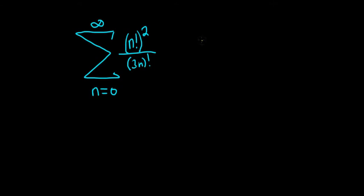Whenever you have factorials, it's usually a good idea to use the ratio test. The ratio test says if you take the limit as n approaches infinity of a sub n plus 1 over a sub n, and you get l, there's three possible cases.